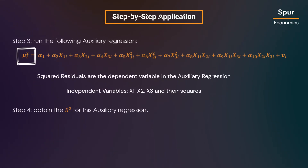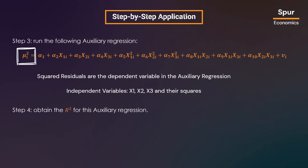Step three involves running another regression with squared residuals (mu-i-squared) as the dependent variable. The independent variables include the original regression variables x1, x2, and x3, as well as the squares of these independent variables: x1-squared, x2-squared, and x3-squared.